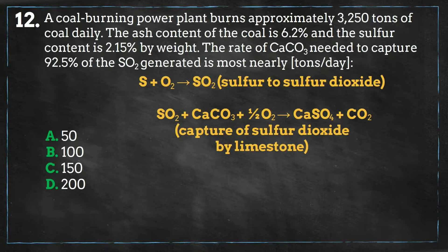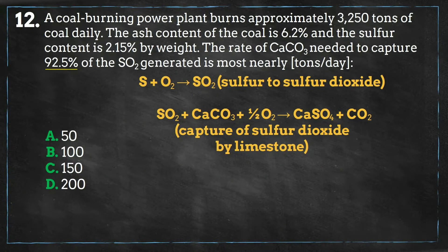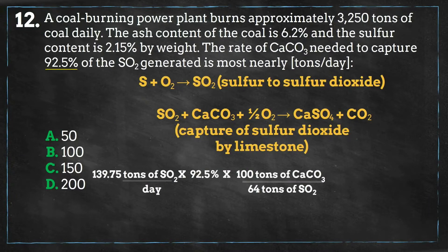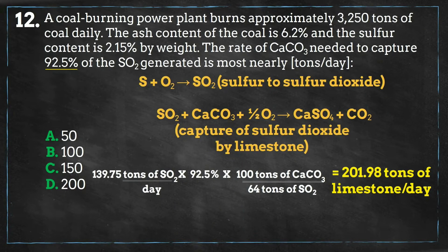Now we will calculate how much limestone we need based off of how much sulfur dioxide we generate. We only need to capture 92.5% of the sulfur dioxide, and based off of the reaction, one mole of calcium carbonate is enough to capture one mole of sulfur dioxide. One mole of sulfur dioxide weighs 64 grams, and one mole of calcium carbonate weighs 100 grams, calculated by adding all of the atomic weights of the chemical constituents. With this information, we need approximately 202 tons of calcium carbonate daily to capture the necessary percentage of sulfur dioxide.